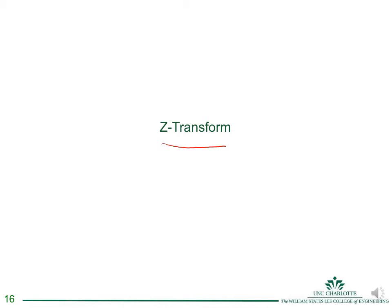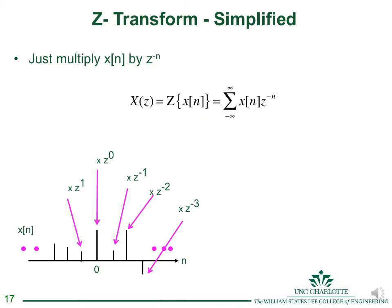The Z-transform is to discrete-time systems what the Laplace transform is to continuous-time systems. The Z-transform X(z) is defined as the sum from minus infinity to infinity of x(n) times z to the minus n. Z is just like s in Laplace — it's a variable and can be complex-valued.